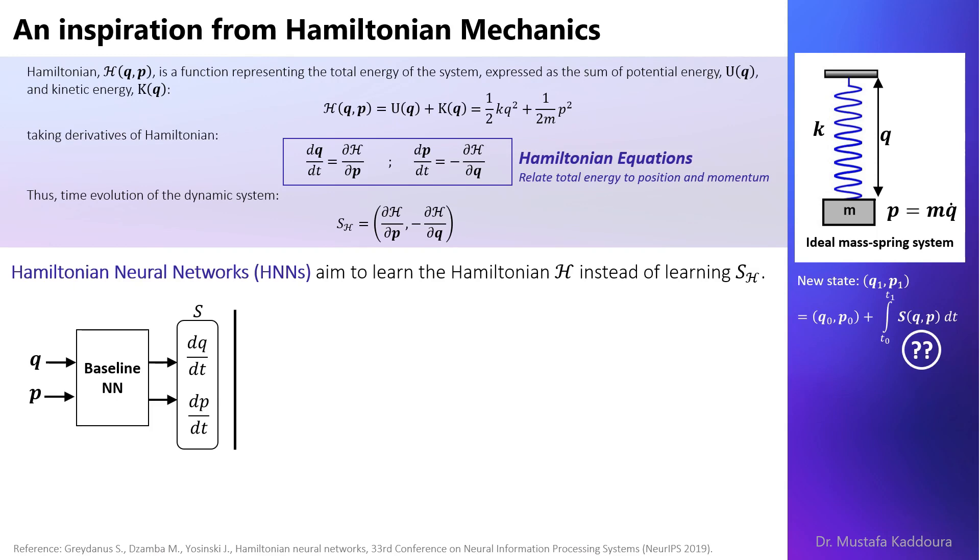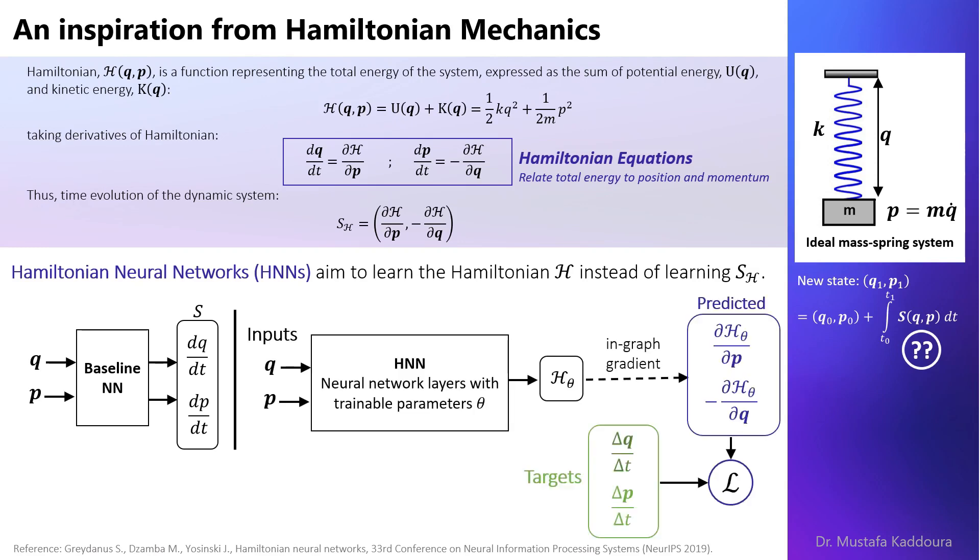On the other hand, in the Hamiltonian neural network we train a neural network with tunable parameters theta to predict the Hamiltonian h. Then we compute the gradient of h with respect to input parameters. And finally we compute the loss function based on the gradient itself.